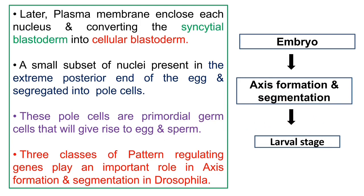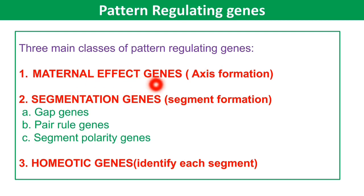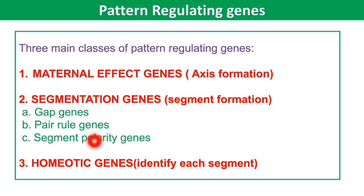Three classes of pattern regulating genes play an important role in axis formation and segmentation in Drosophila. Number one: maternal effect genes, involved in anterior-posterior and dorsal-ventral axis formation. Number two: segmentation genes, involved in segment formation, with three types — gap genes, pair-rule genes, and segment polarity genes. Number three: homeotic genes, responsible for specifying the identity of each segment.